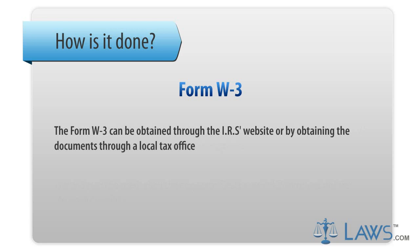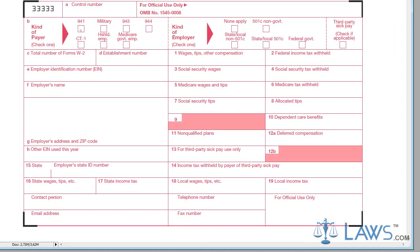The form W-3 can be obtained through the IRS's website or by obtaining the documents through a local tax office. First, you must start by indicating the kind of payer and the kind of employer filing the form W-3 in box B. Next, list the total number of W-2s covered in box C, along with the establishment number, employer identification number, and employer's name and contact information in boxes C through G on the left section of the form.